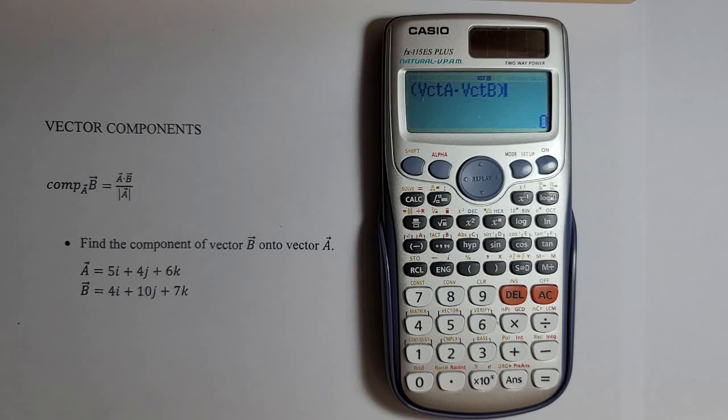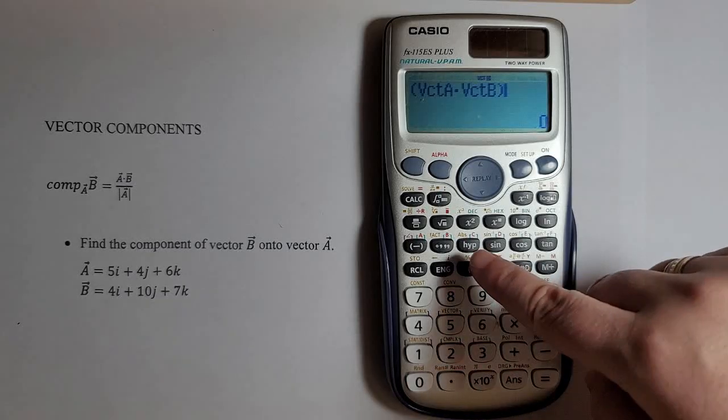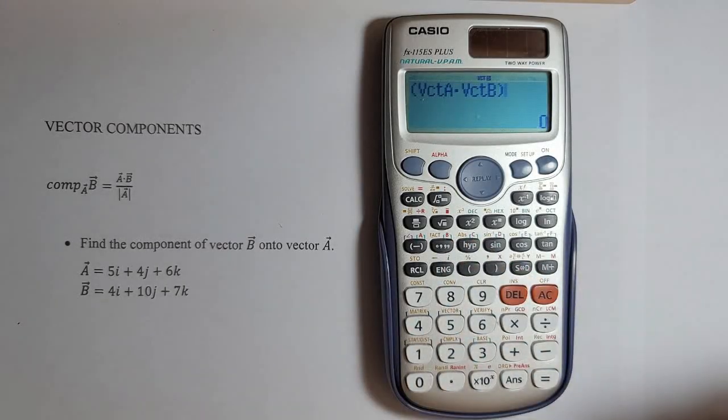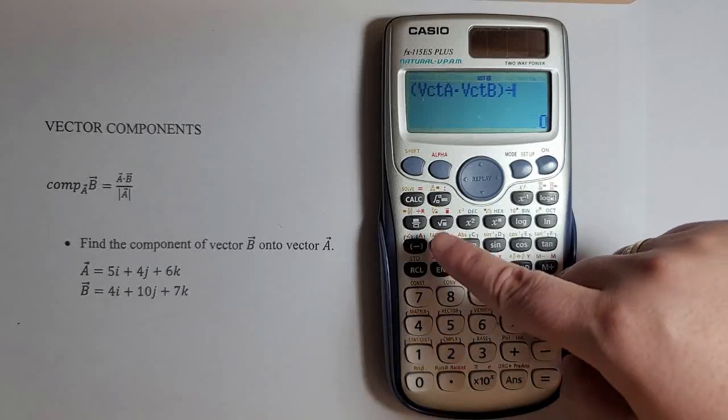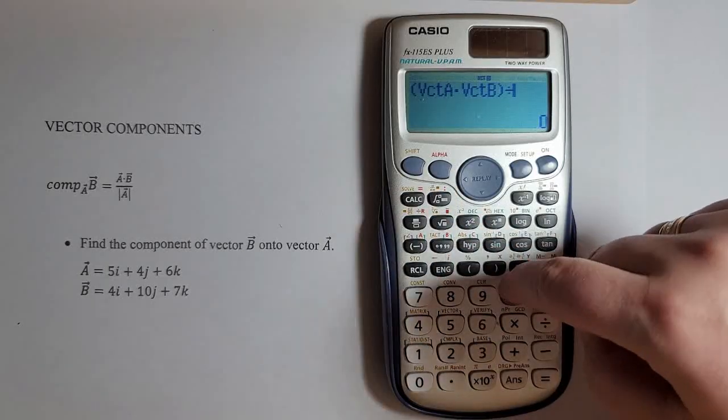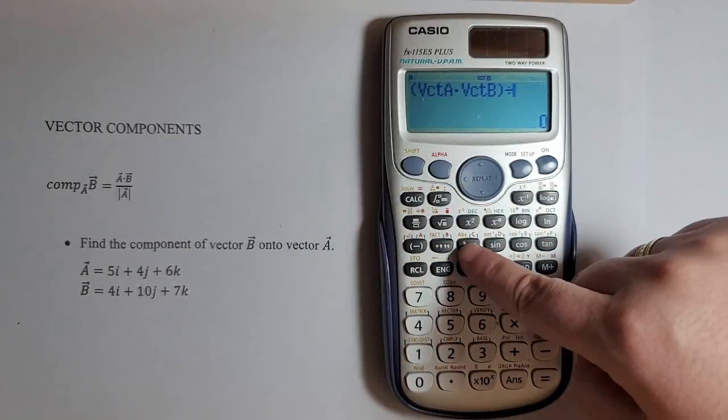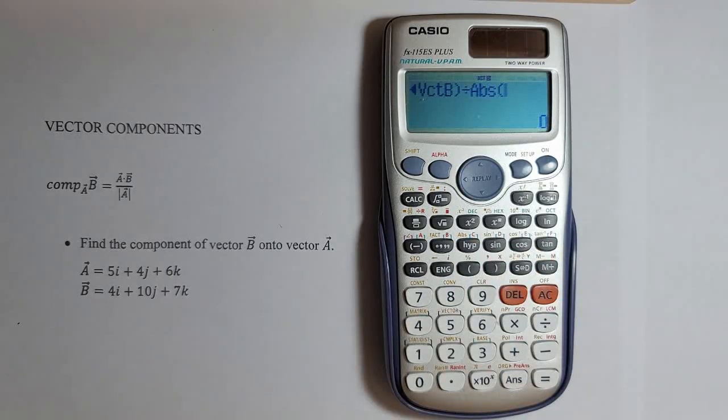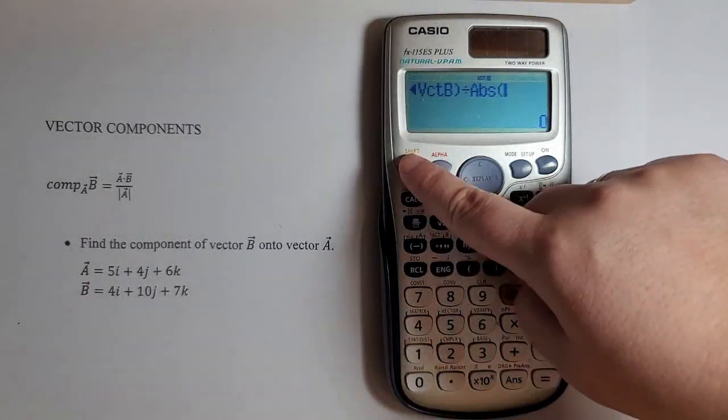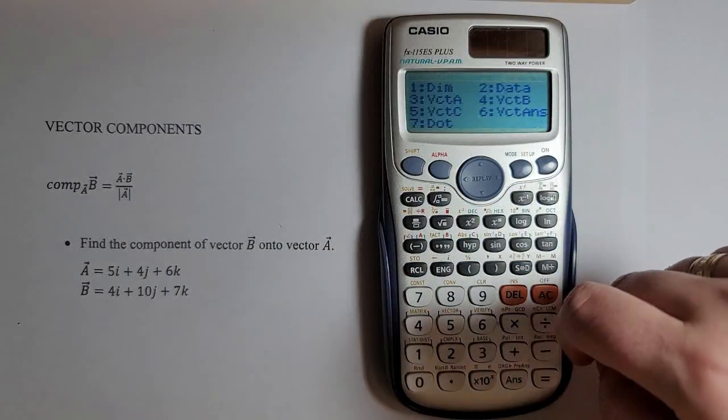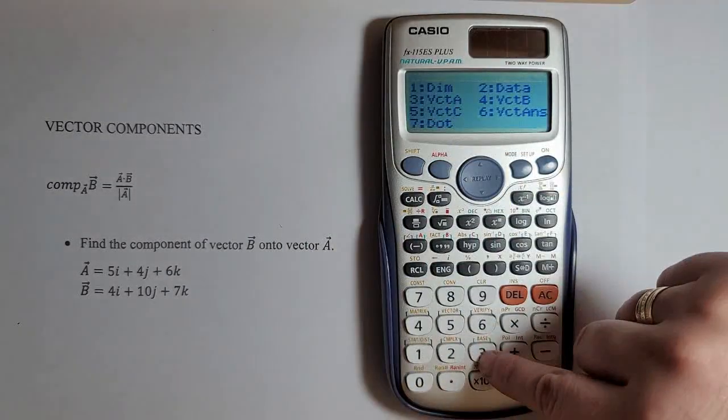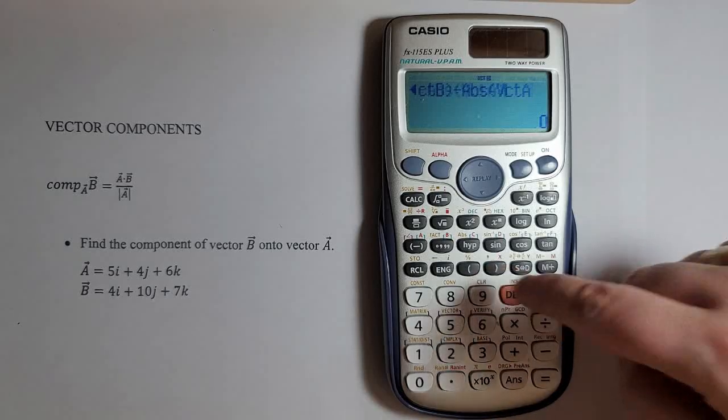Now I will divide with the magnitude of vector A. To find the magnitude of a vector, I will use this absolute key here. So divide. To access the absolute key, I will press shift, shift, then absolute. And now I have magnitude of vector A. Shift, vector 3 for vector A. Close the parentheses.